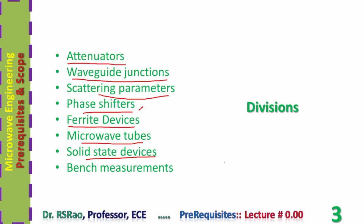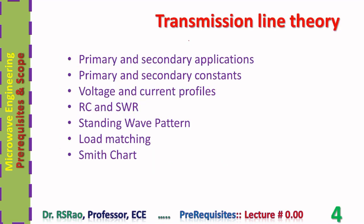The subject microwave engineering usually concludes with one or two chapters on bench measurements using a bench setup, where quantities like standing wave ratio, frequency, load impedance, and others are measured at microwave frequencies. For transmission line theory, the primary application is to transfer energy from one point to another. Secondary applications include design of circuit components like inductors and capacitors, design of resonant circuits using lines as stubs, and load matching.